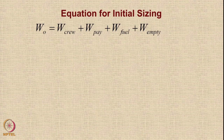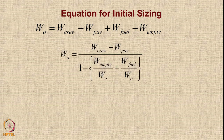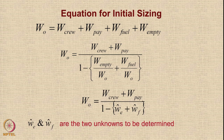The equations for initial sizing are straightforward. We replace W0 by a summation of 4 terms. Since 2 of these terms are specified by requirements or the mission, we keep them in the numerator. We take the remaining 2 terms and divide by W0 on both sides, giving us 2 ratios: the empty weight ratio and the fuel weight ratio. Since the numerator is known, to calculate W0 we only need to calculate W_e_bar and W_f_bar, the remaining 2 unknowns.